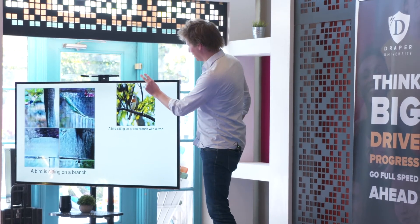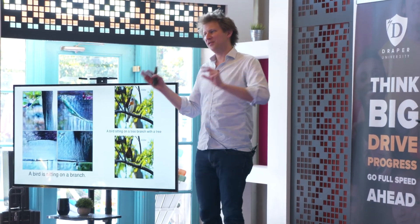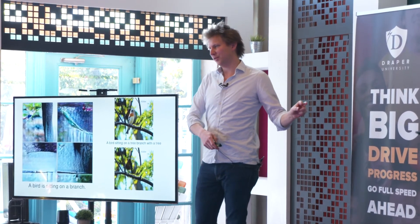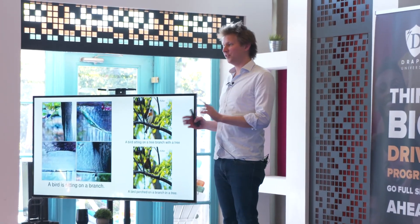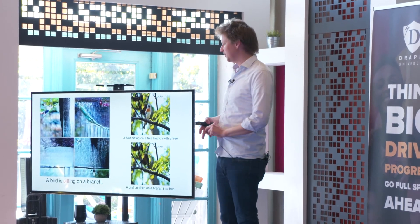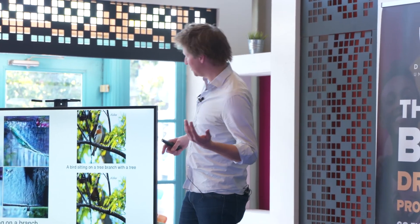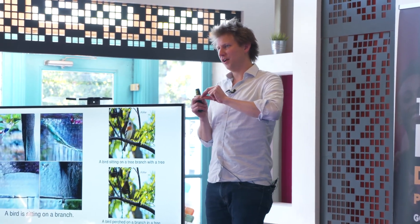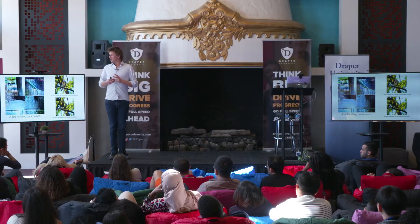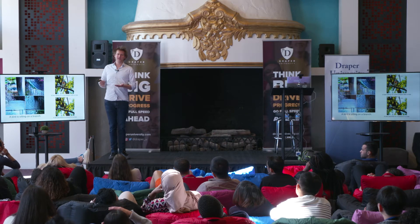To figure this out, we took a bird image from Google Images, put it into the caption model, and it said 'a bird sitting on a tree branch with a tree' — grammatically weird, but it has all three concepts: bird, tree, and branch. Then my co-author painstakingly Photoshopped out the bird, gave that image to the caption model, and got almost the same result: 'a bird perched on a branch in a tree.' So the caption network is not asking the generator to draw birds because bird, tree, and branch are co-mingled to it.